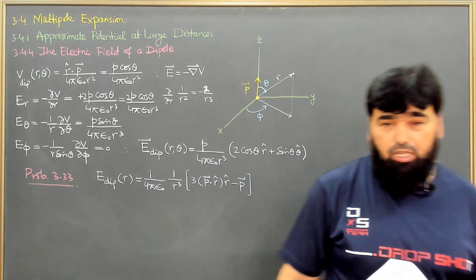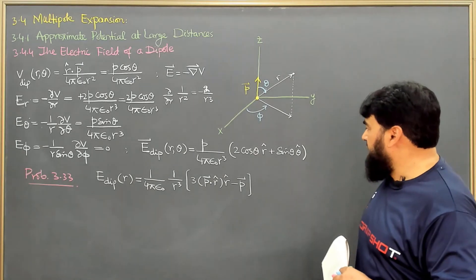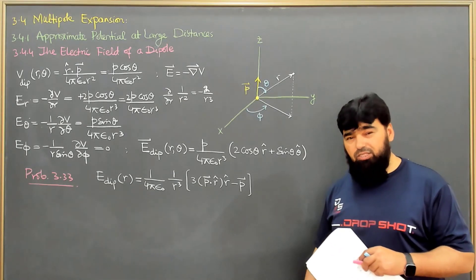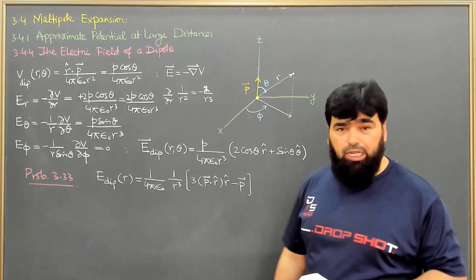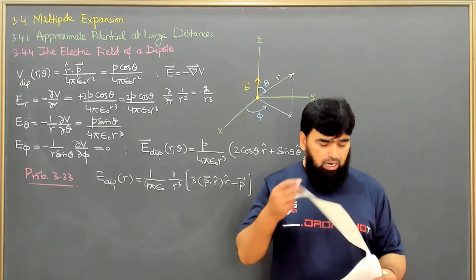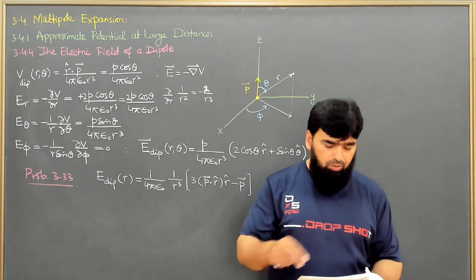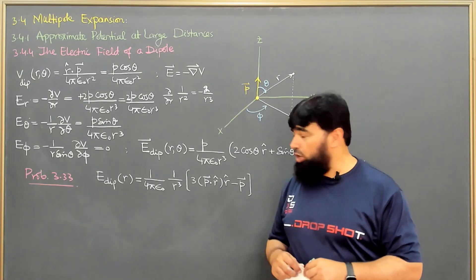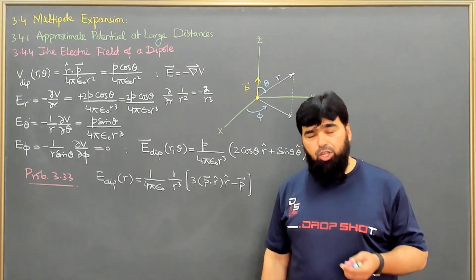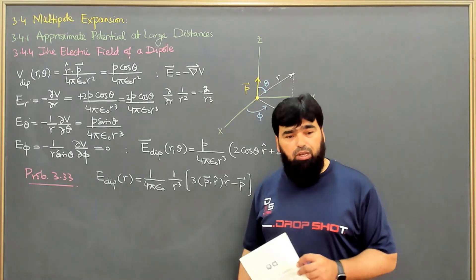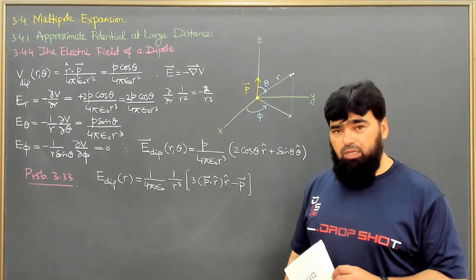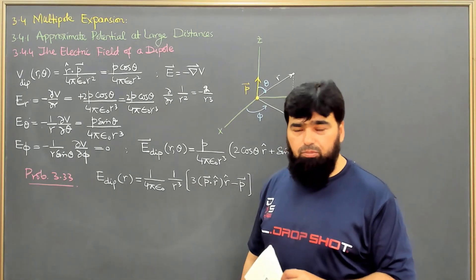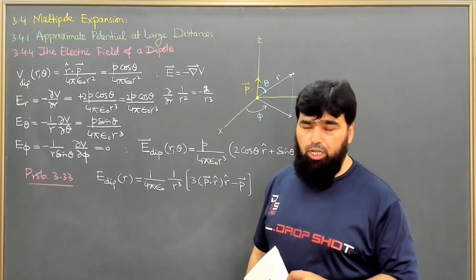To prove this, you need to know how to convert theta-hat into a form involving R-hat and then simplify. With this, we are done with Chapter 3 of Griffiths, and we will soon start Chapter 4. Thank you for watching — if you have any questions, please ask in the comments and I will try to respond as quickly as possible.